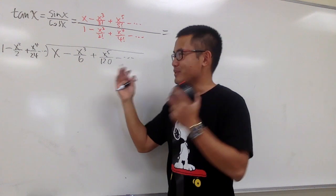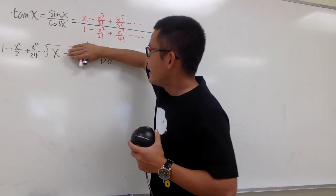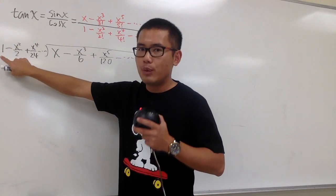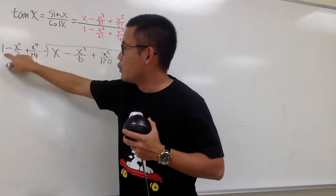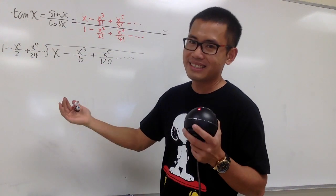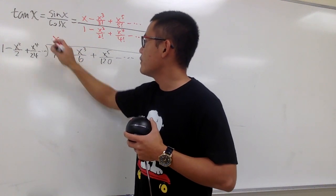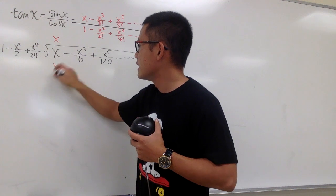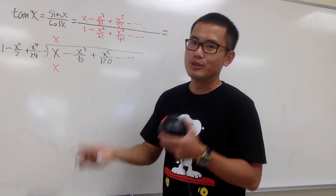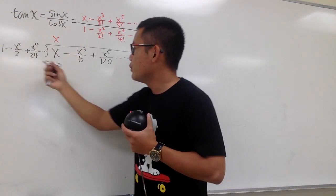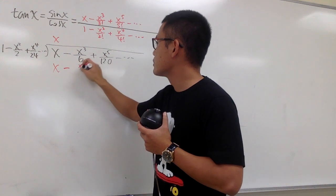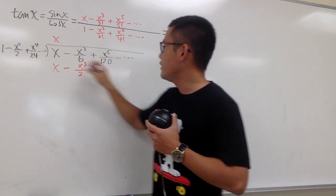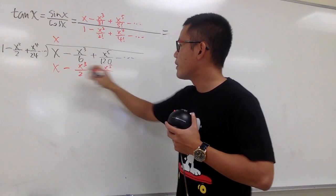Cover everything except x, and cover everything except 1. We ask: what times 1 gives us x? Just x. So we put down x as the first term. x times 1 gives us x. x times the remaining terms — the powers go up by 1 — so we get minus x to the third power over 2, plus x to the fifth power over 24.